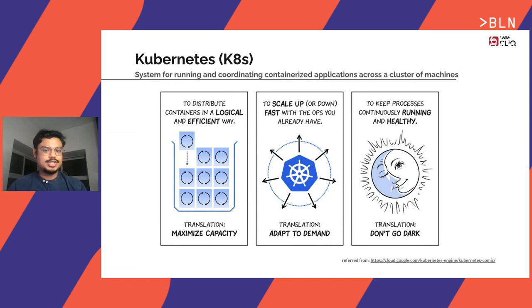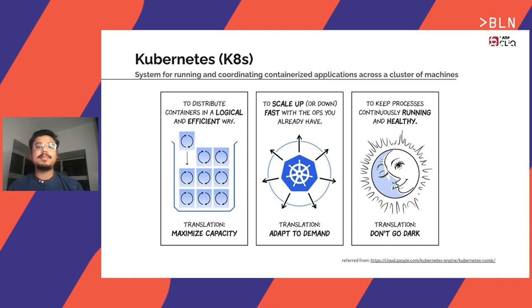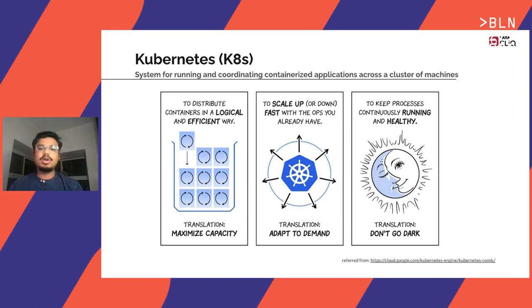Kubernetes is an orchestration tool — a system used for automating and coordinating containerized applications across a cluster of machines. Kubernetes maximizes capacity by logically and efficiently distributing containers. Containers have respective processes. Based on the demand — live traffic, more data, data segregation — the machines can be scaled up or scaled down. Moreover, it makes sure the processes we configure keep running and remain healthy. Kubernetes does all of this without any macro management. We are not dwelling into the details of Docker and Kubernetes in this talk since there are multiple discussions that have been done previously.